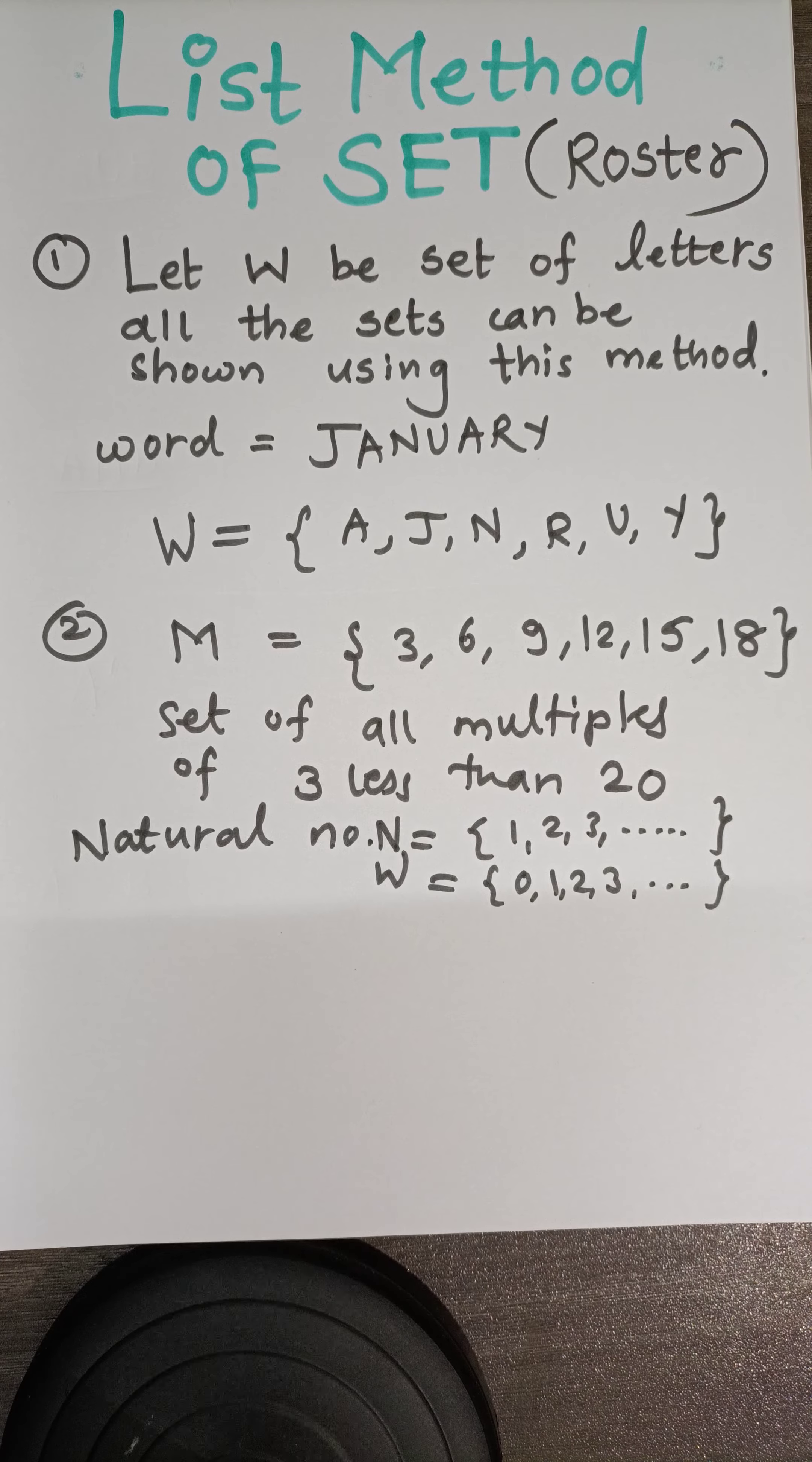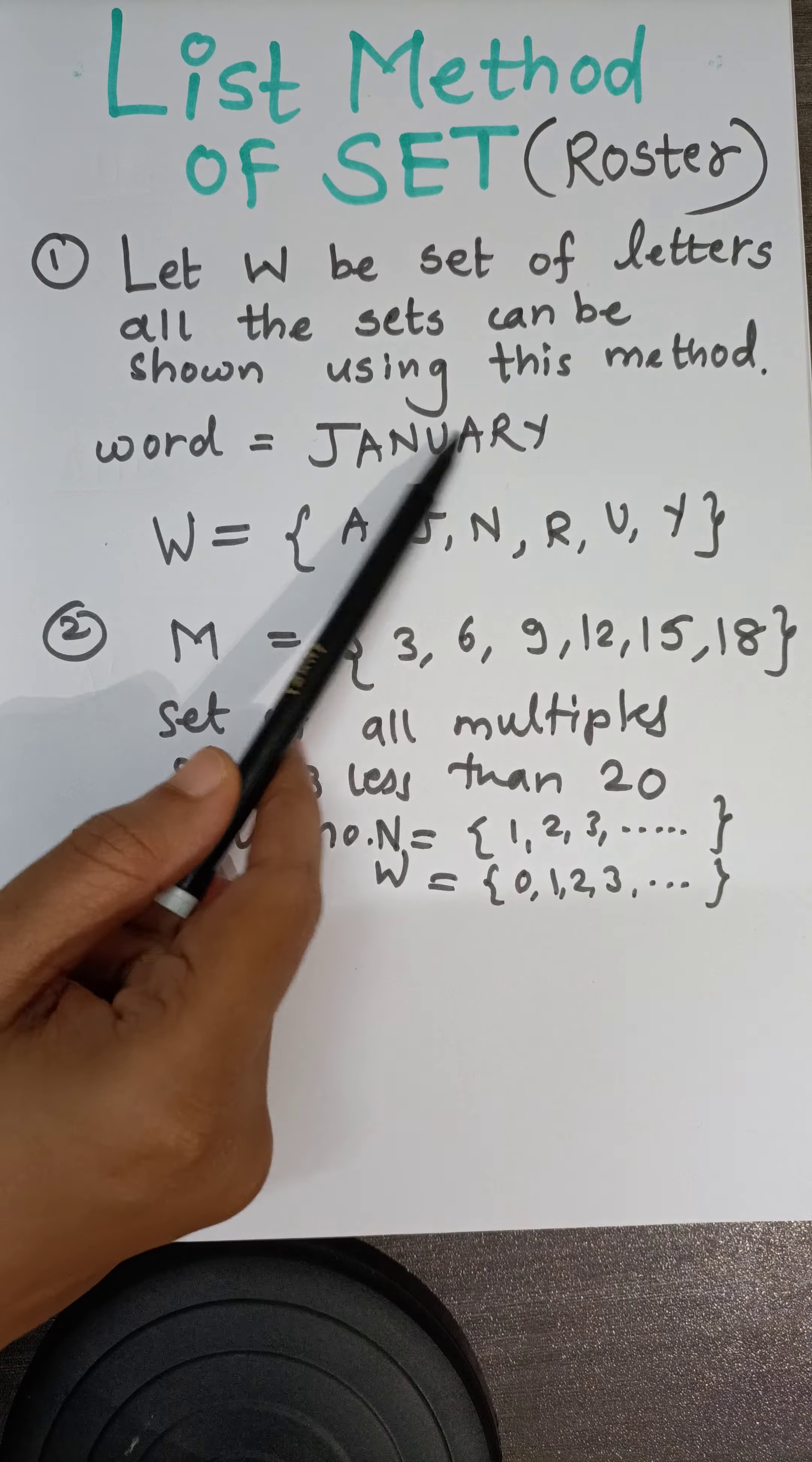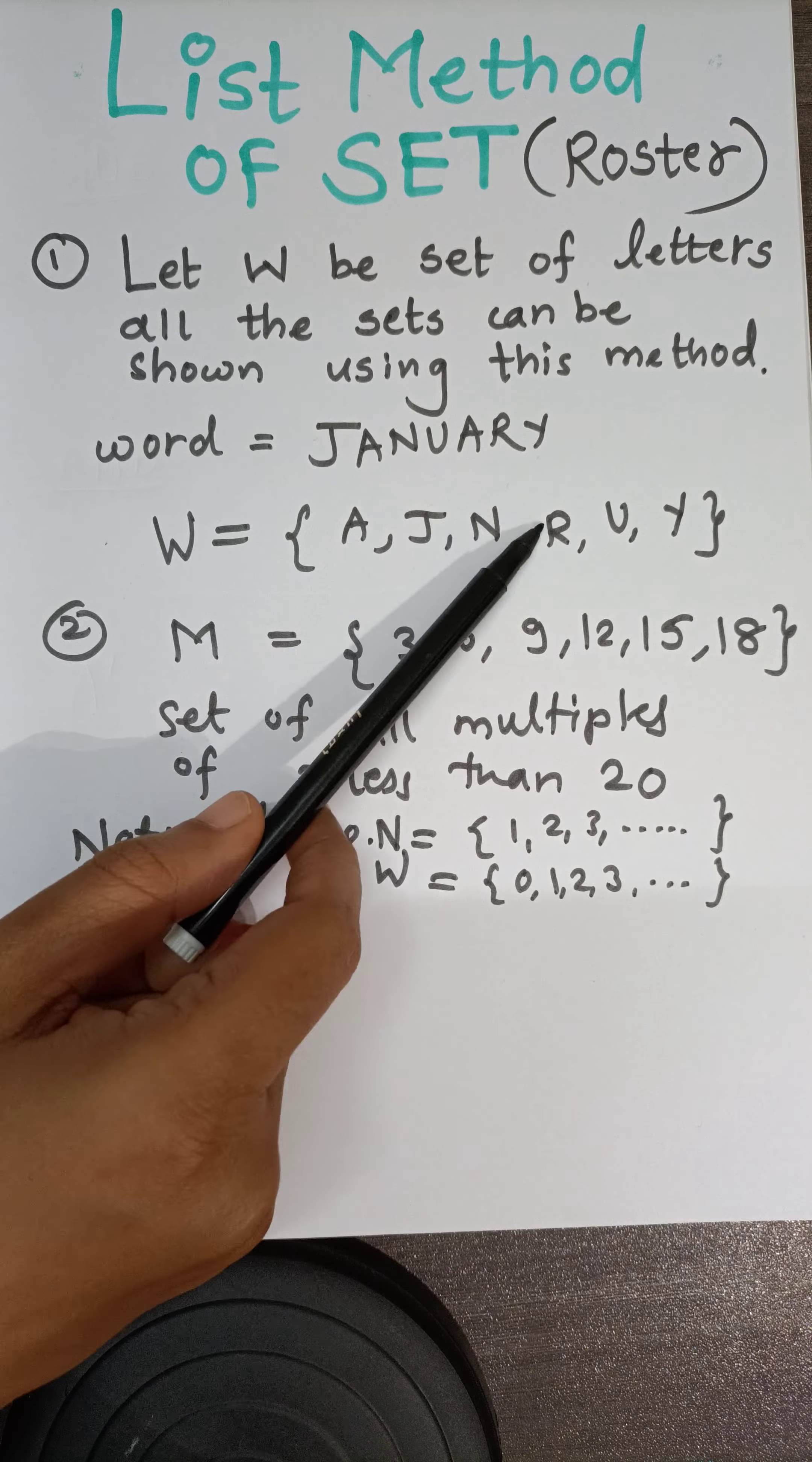In this method, we define a set by listing out all the elements in the set. Like here I want to represent the word JANUARY, it is the first month of our calendar. So all the letters present in this set I will write separated by commas, and I am going to indicate it with a letter, for example W. So it will contain all the letters.